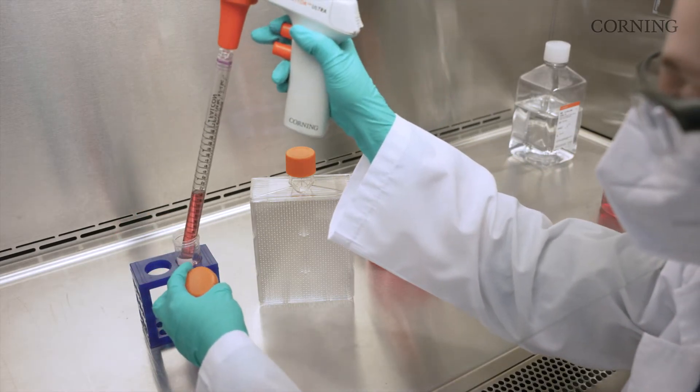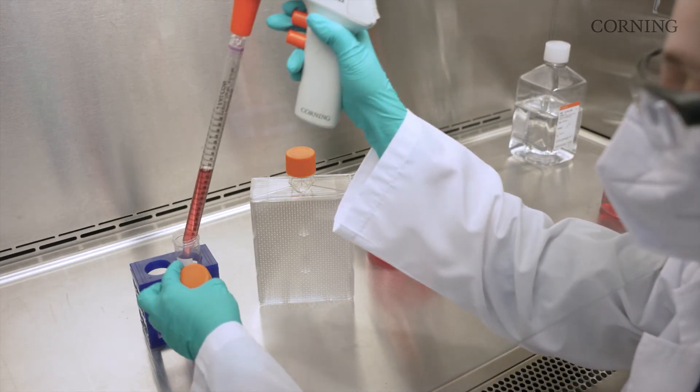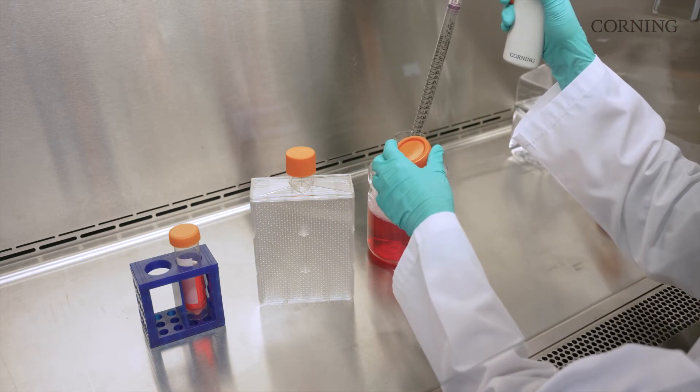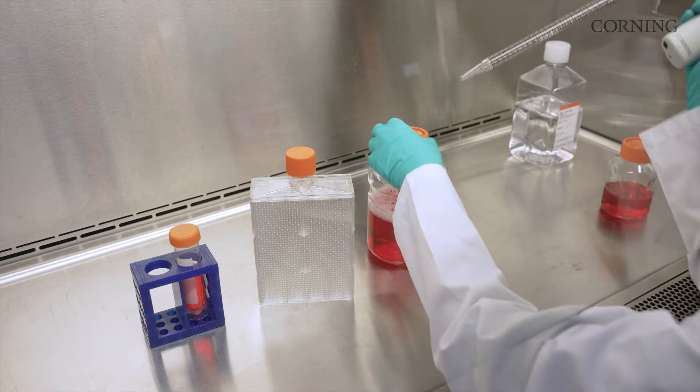To seat a Corning hyperflask cell culture vessel, create a 560 milliliter inoculum of cells. By using enough media to fill the entire vessel, you'll guarantee a uniform cell distribution.